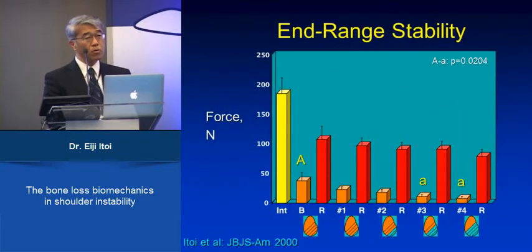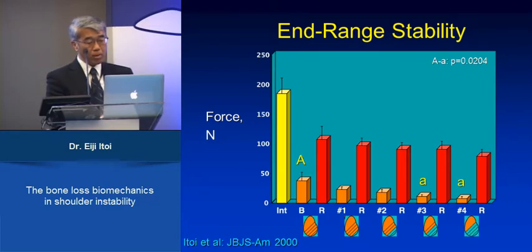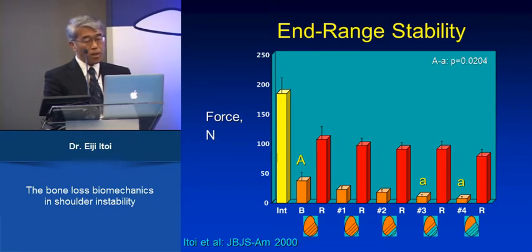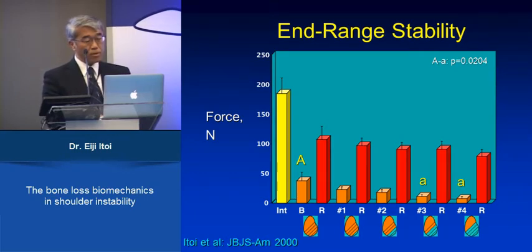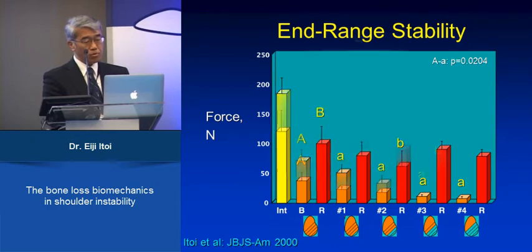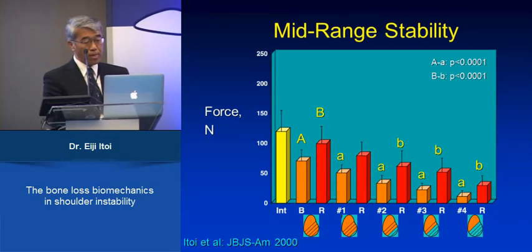So what's wrong with the glenoid bony defect? We created the bony defect stepwise in a cadaveric model and then repaired the Bankart lesion. The stability with the arm at end range of motion was not deteriorated at all. However, the stability at mid-range of motion decreased significantly after repairing the Bankart lesion if the bony defect is large.